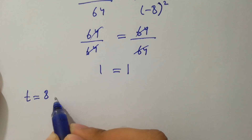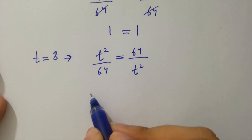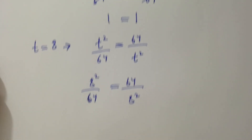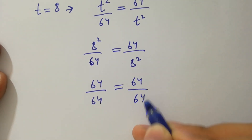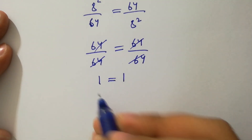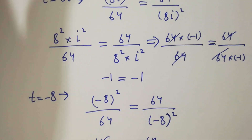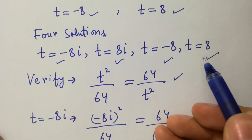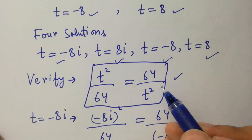Next, for t equal to 8, put into the equation t squared over 64 equal to 64 over t squared. We have 8 squared over 64 equal to 64 over 8 squared. Since 8 squared is 64, we get 64 over 64 equal to 64 over 64, which cancels to give 1 equal to 1. Left hand side equals right hand side, which shows that the values t equal to minus 8i, 8i, minus 8, and 8 all satisfy the equation t squared over 64 equal to 64 over t squared.